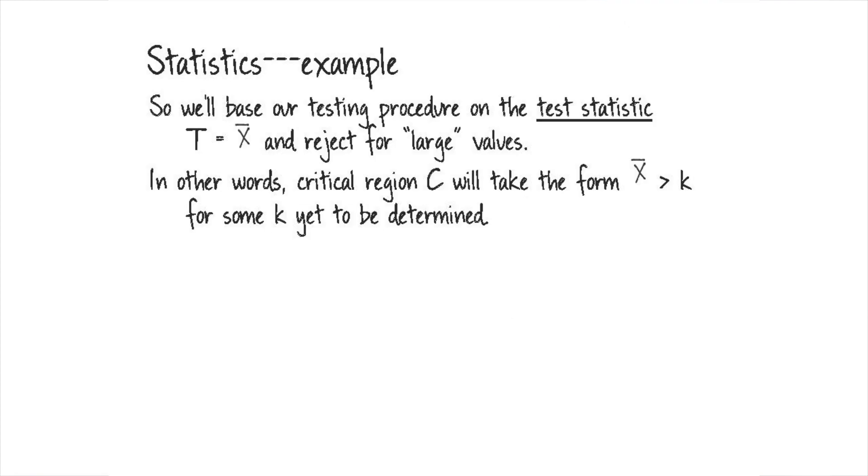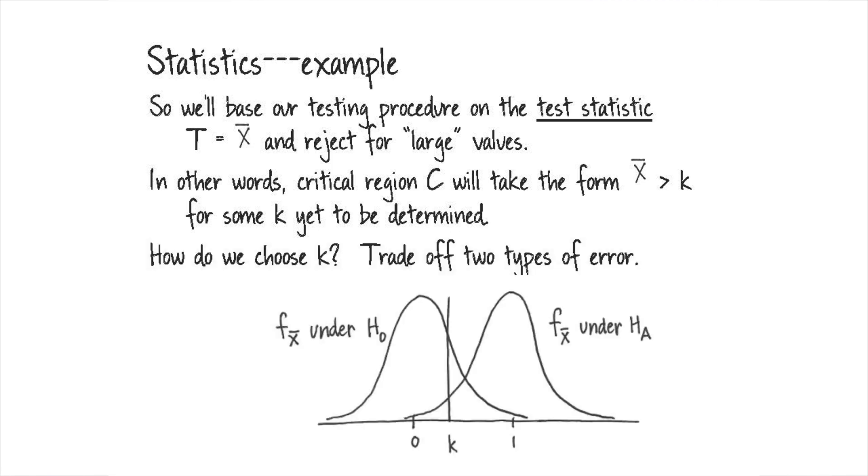So we'll base our testing procedure on the test statistic. We'll call this sample mean now the test statistic, and sometimes we'll denote it T. In this case, our test statistic is just equal to X bar. And what we're going to do is reject for large values of X bar. So in other words, the critical region is going to take the form X bar greater than K for some K that we have yet to determine.